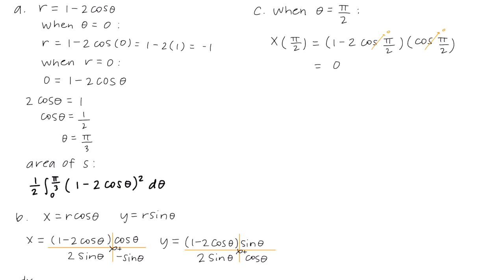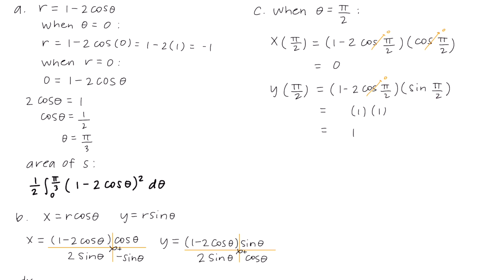For y: y equals (1 minus 2 cosine theta) times sine theta, with theta equals pi over 2. Cosine of pi over 2 is 0, so the first factor becomes 1. Sine of pi over 2 is also 1. So y equals 1. Our coordinate point is (0, 1).